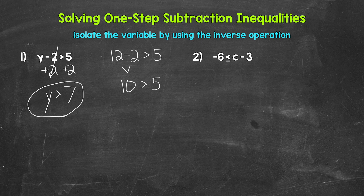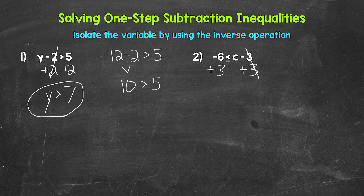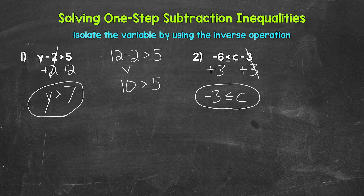Let's move on to number two where we have negative 6 is less than or equal to c minus 3. So we are subtracting 3 from c — we need the inverse operation of subtraction, which is addition. So add 3 to the right side of the inequality, and add 3 to the left side as well. These threes cancel each other out. C is now isolated. So we have c is greater than or equal to, and then on the left side, negative 6 plus 3 gives us negative 3. So c is greater than or equal to negative 3.